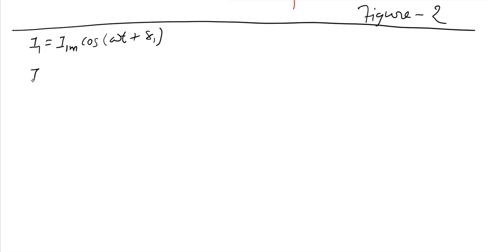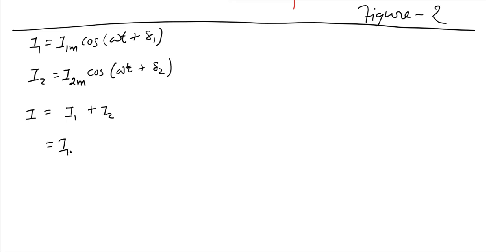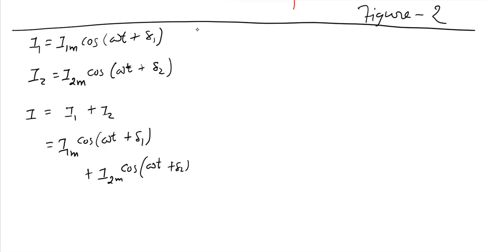...and current in some other arm is i2 = I2m cos(ωt + δ2). Now if I want to find the resultant current, mathematically if I take i = i1 + i2, I'll need to undergo a clumsy mathematical exercise. But instead, if these two can be added graphically, that mathematical exercise can be bypassed. That is the second application of phasor.